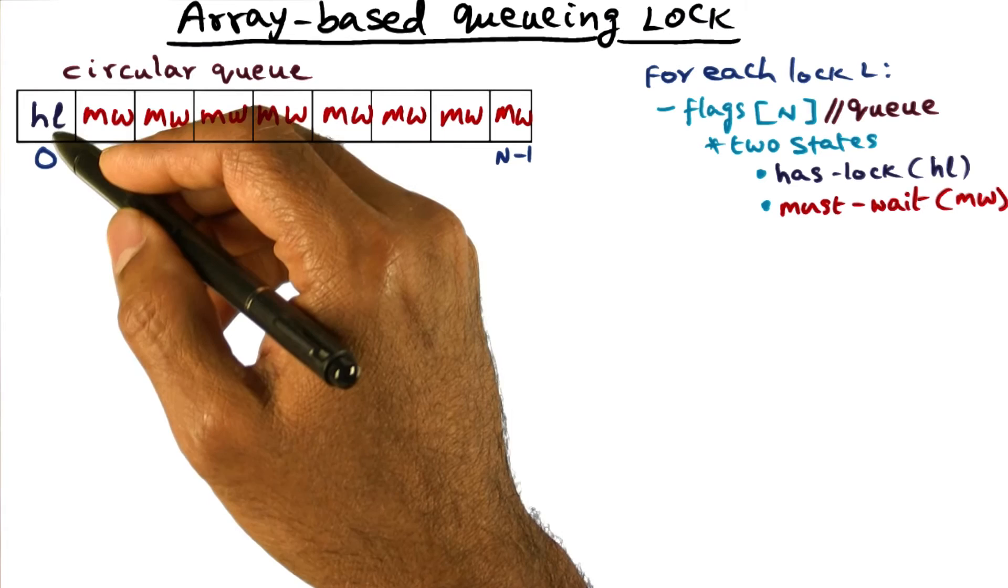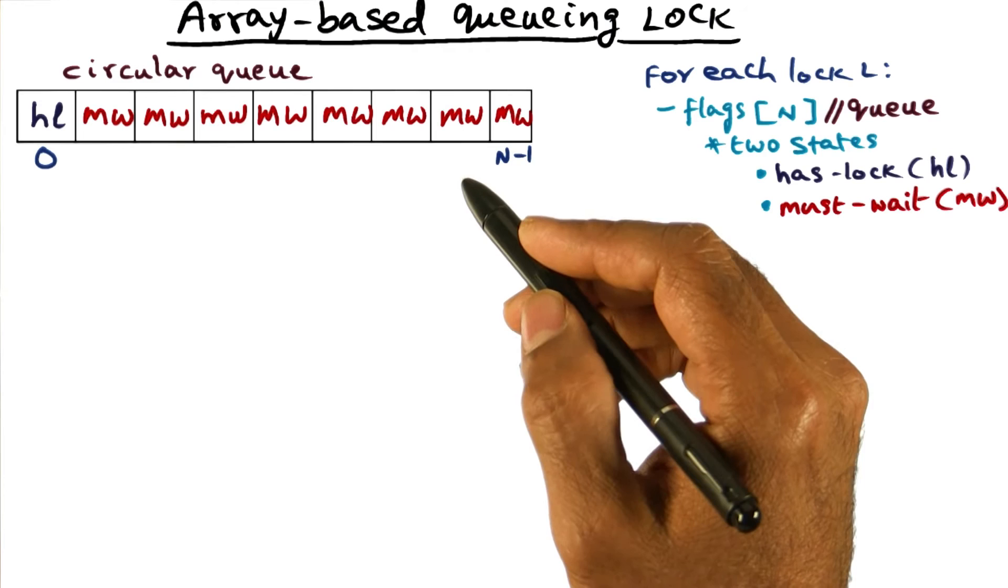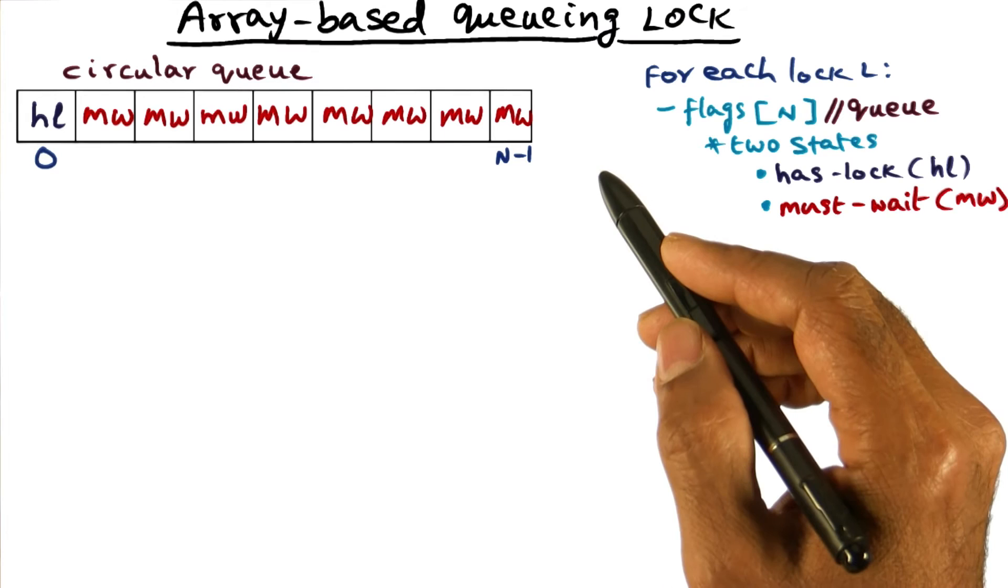There can be exactly one processor that can be in the HL happy state because it's a mutually exclusive lock. Therefore, at most one processor can have the lock at a time, and all the others should be waiting.